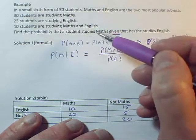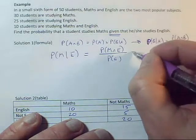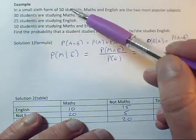And given the probabilities I've actually been fed in the question, this is very easy to do. I know the probability of maths and English. Well, I know how many there are.